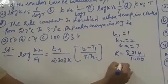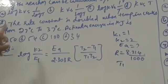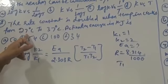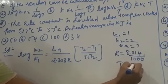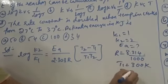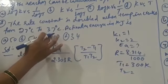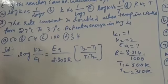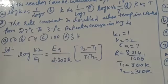T1 is 27 degrees centigrade, convert into Kelvin: 27 plus 273 gives T1 = 300 Kelvin. T2 is 37 degrees centigrade, convert into Kelvin: 37 plus 273 gives T2 = 310 Kelvin. By substituting all these values we can calculate Ea.